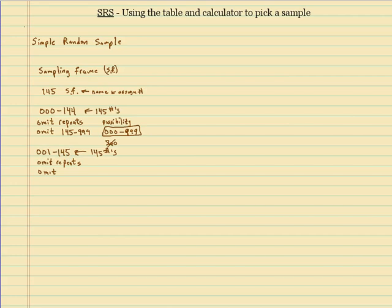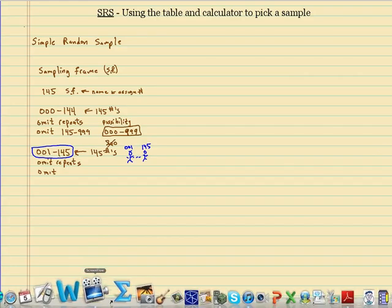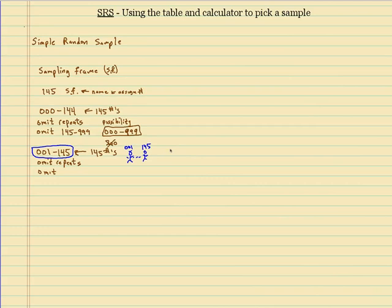So all 145 people each have a number from 001 to 145. The possibilities when choosing three digits are 000 to 999. So you have to omit 000 and 146 through 999, since no one in the sampling frame holds those numbers.